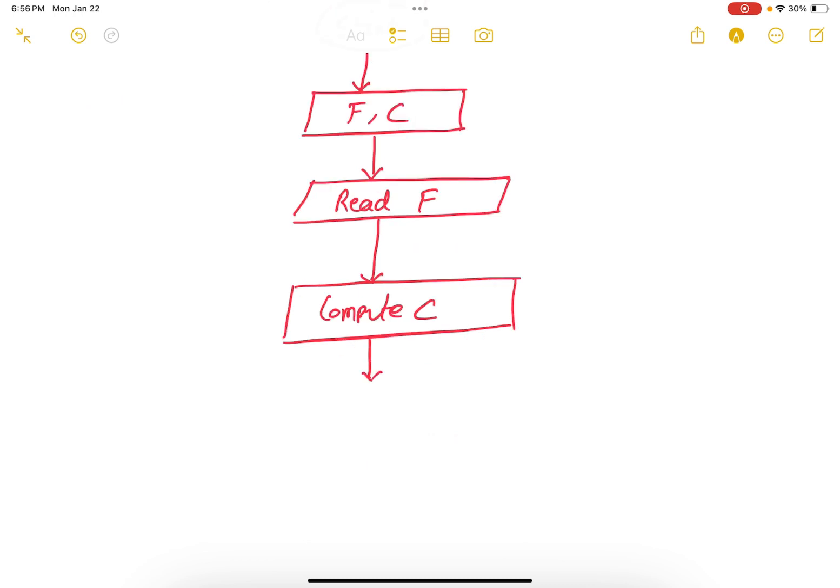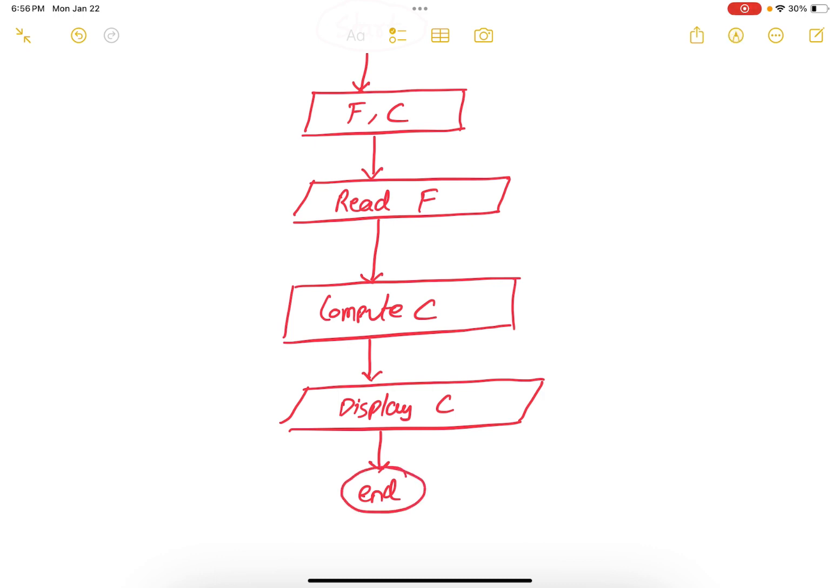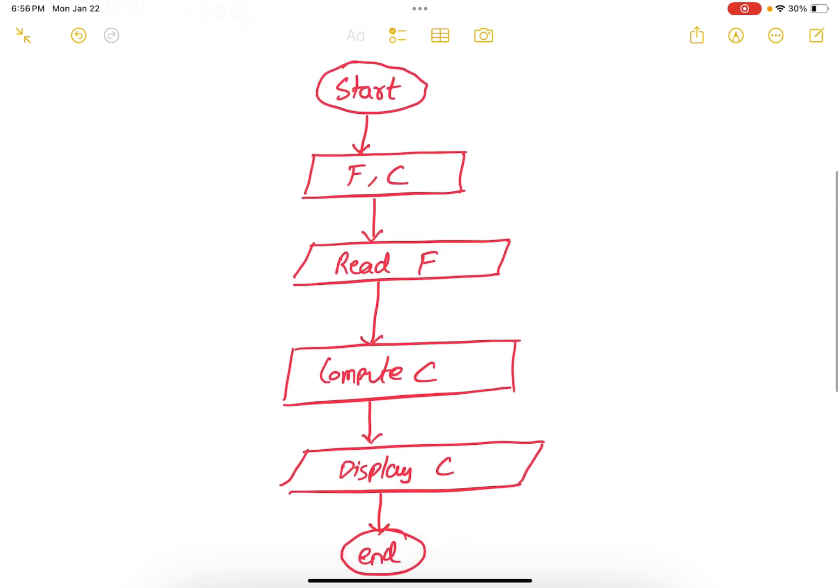Then display the result. For display, I'm going to use the parallelogram as well. Anything which is input or output, I'm going to put it in a parallelogram. Display the value of C and then end. So this is known as a flowchart. You go from start to end sequentially.